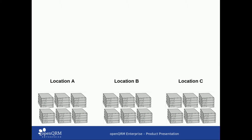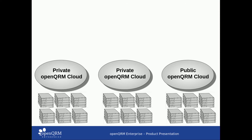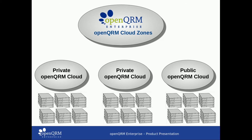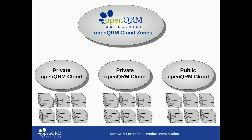So how does OpenQRM Enterprise Cloud Zones work? Let's assume you have three different data center locations. Then each location is managed by a private or public OpenQRM Cloud. As a central point of management, OpenQRM Enterprise Cloud Zones sits on top of your OpenQRM Clouds and manages them via their well-defined SOAP API.